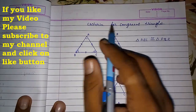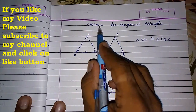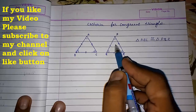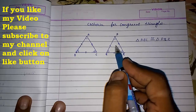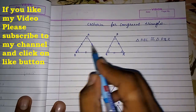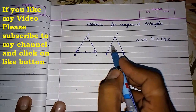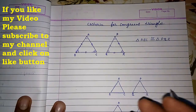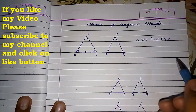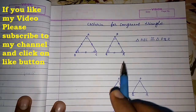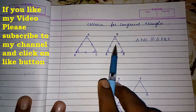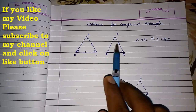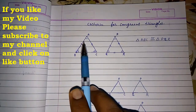Now we are going to study different criteria for congruence. Previously, we had to prove all sides and all angles are equal to say two triangles are congruent. But mathematicians found some shortcuts — by which, if only a few things in those two triangles are equal, we can directly prove they are congruent.